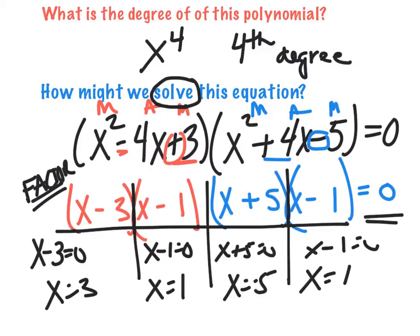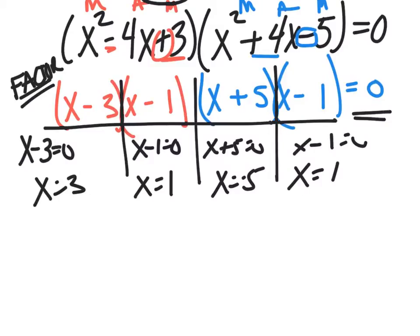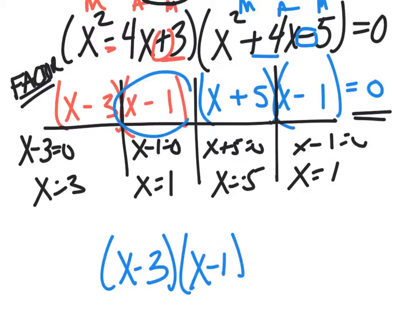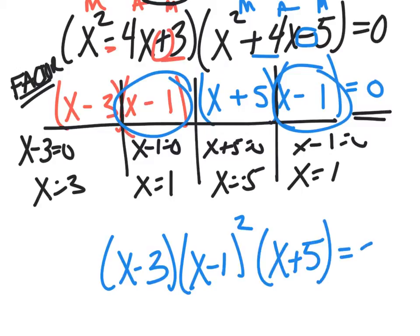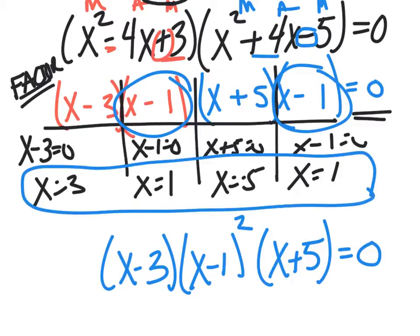You'll notice this was a fourth degree polynomial and I've got four values for x. However, two of them are the same. So we can say we have x - 3 with a multiplicity of 1, x - 1 with a multiplicity of 2 — notice there are two of them — and x + 5. That's just another way to write it, describing the multiplicity.